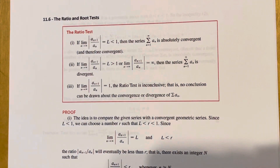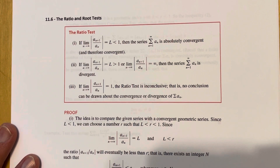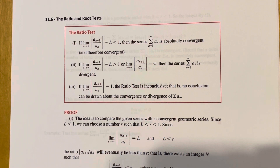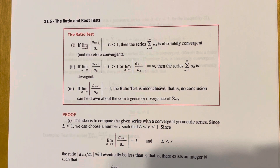We're in section 11.6. This is not a super long section, but it's a really important one. It involves two more convergence tests for series, and one of them in particular, the ratio test — the first that we're going to talk about — we're going to use extensively throughout the rest of this chapter.